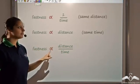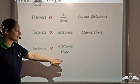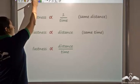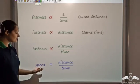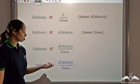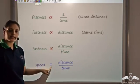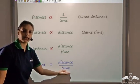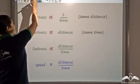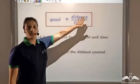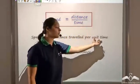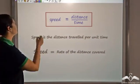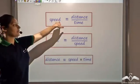Removing the proportionality sign and introducing an equality, I call this speed. So speed equals distance divided by time. Speed is the distance travelled per unit time, or you can say speed is the rate at which distance is covered.